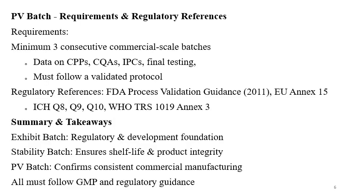PV batch requirements and regulatory references: a minimum of three consecutive commercial scale batches are required. Complete data on critical process parameters (CPPs), critical quality attributes (CQAs), in-process controls (IPCs), and final testing should be available. A Certificate of Analysis (COA) must be generated and provided. These must follow the validated protocol. Guidelines from USFDA, ICH, WHO, and EMA apply to PV batches.